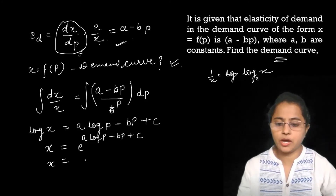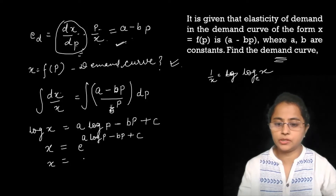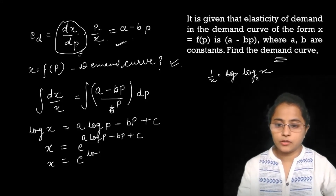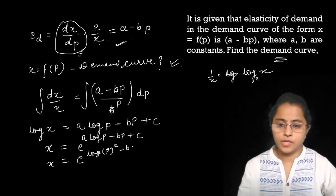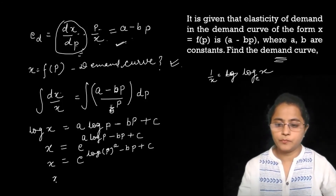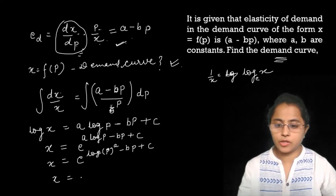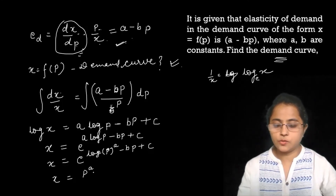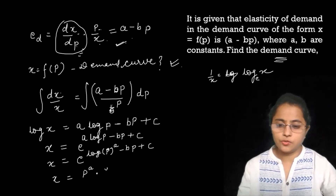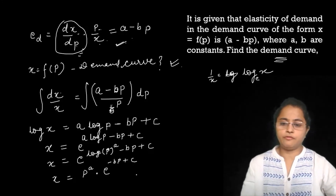Now let's write this in a more simplified form. x = e raised to (a·log p − b·p + c). Since e raised to log base e of p^a equals p^a, and e^(log p^a) simplifies to p^a, we separate the terms: x = p^a × e^(−b·p + c).